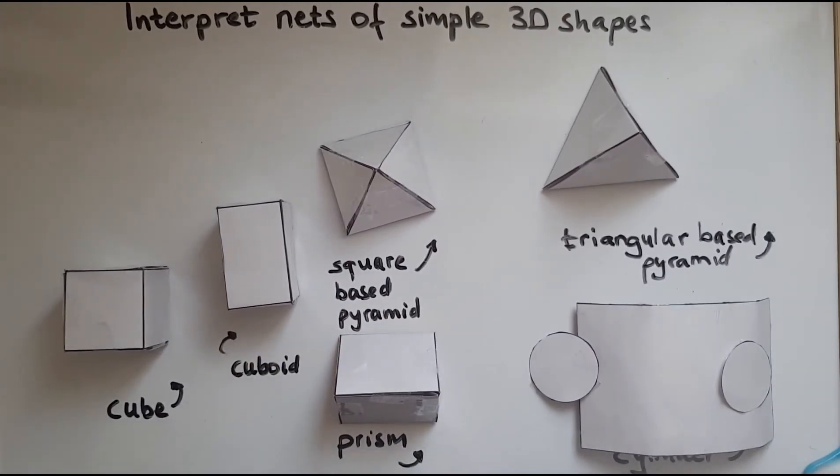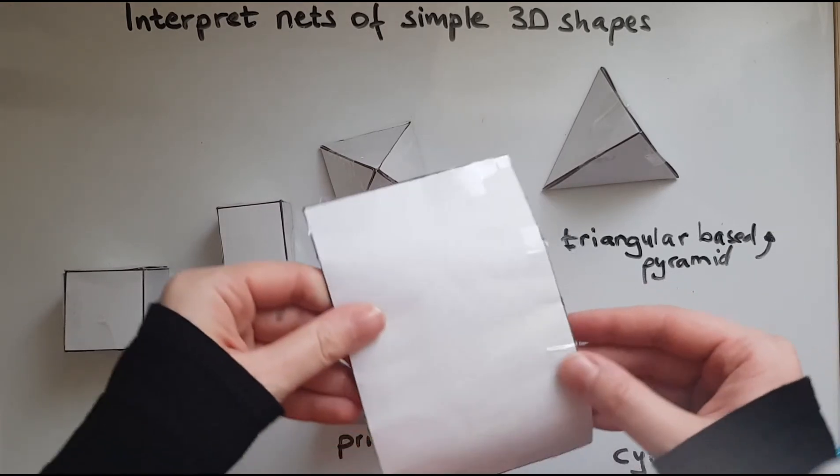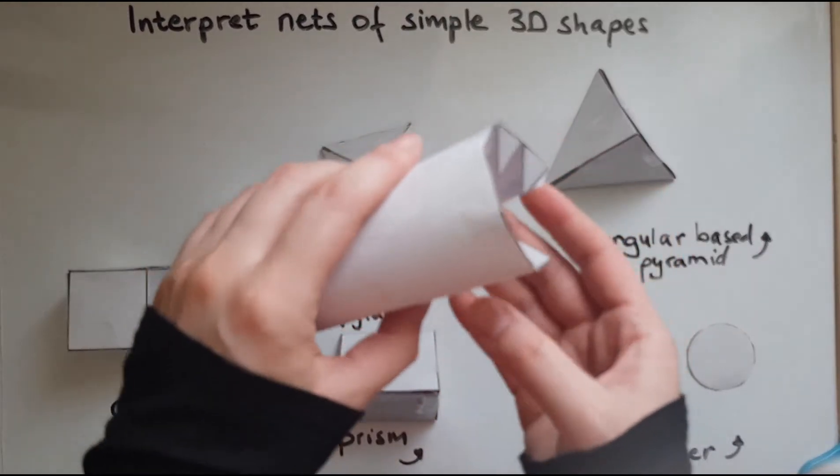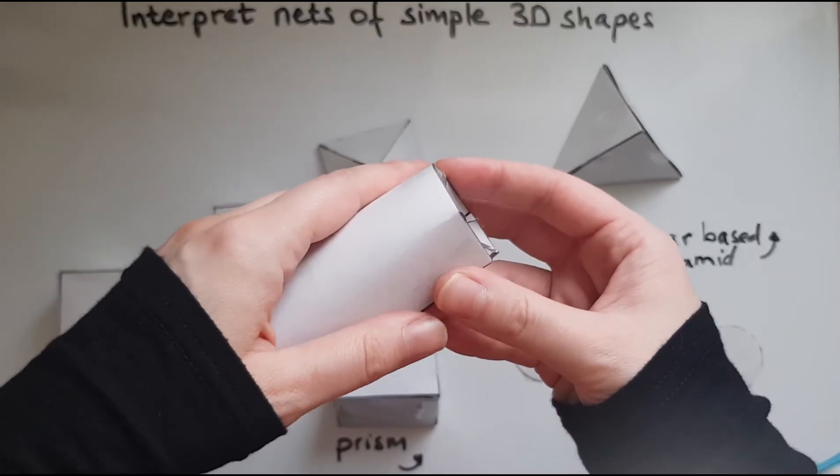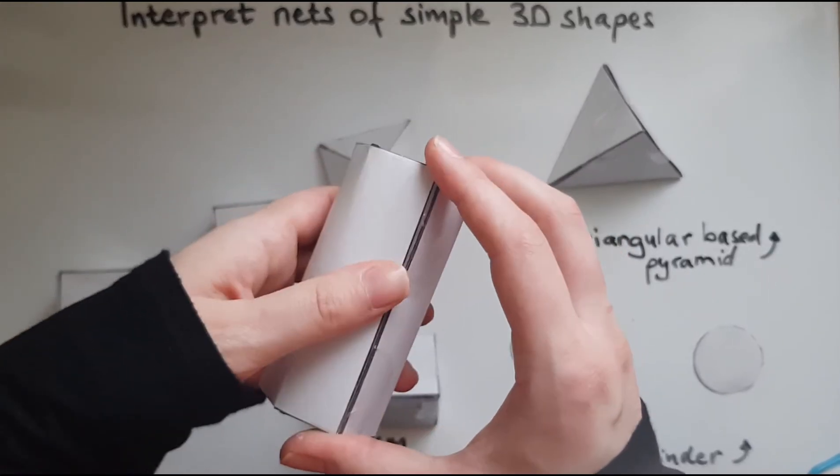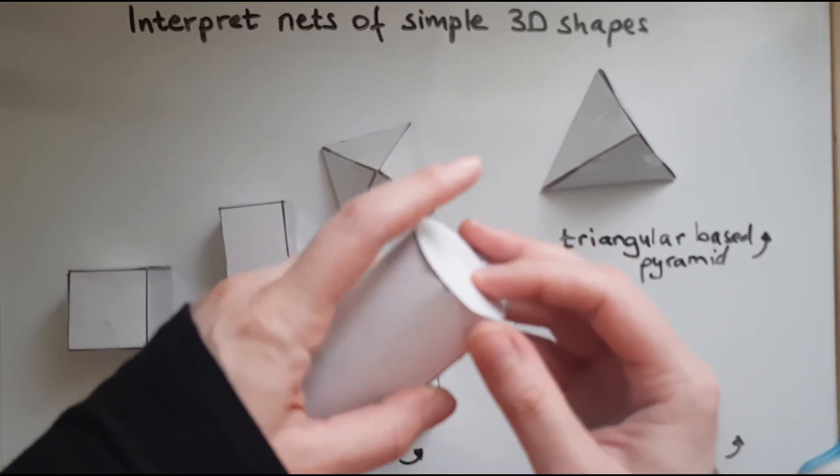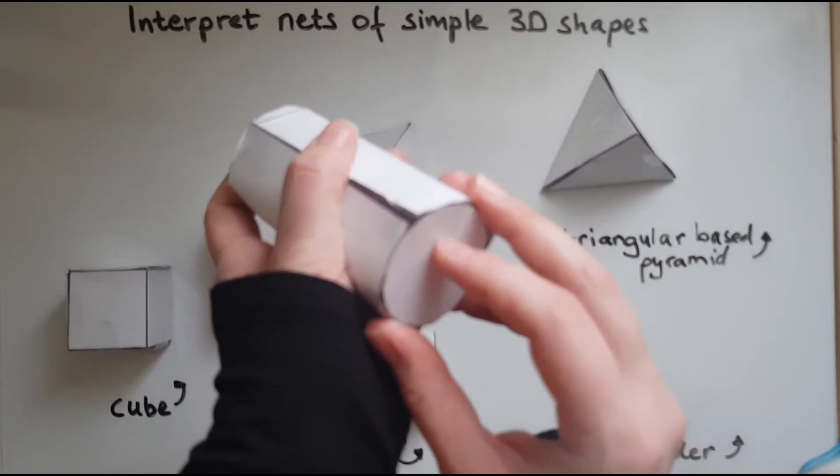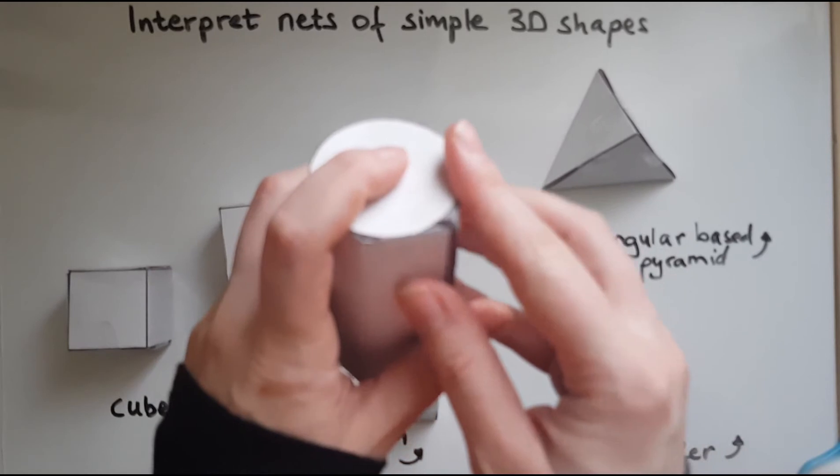Finally, we'll look at the cylinder. So, as you can see, there is a rectangle. And on the side, we have these two circles.